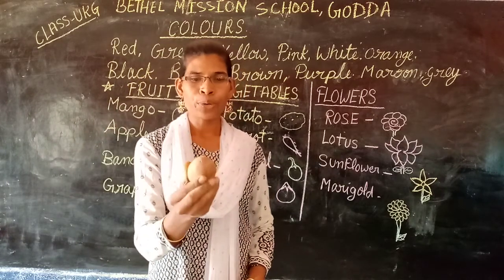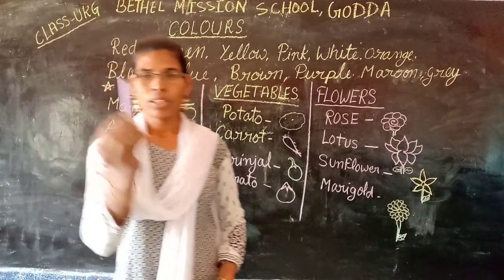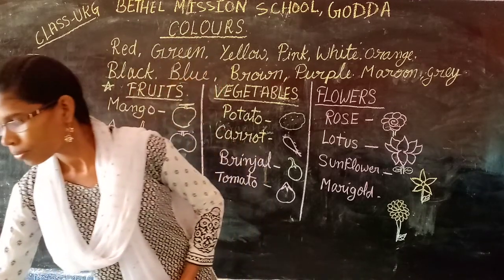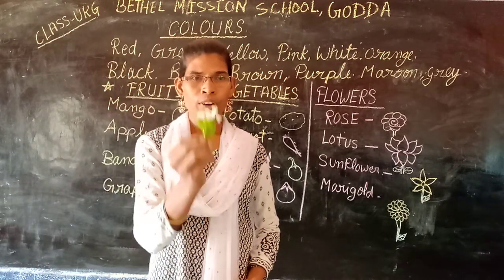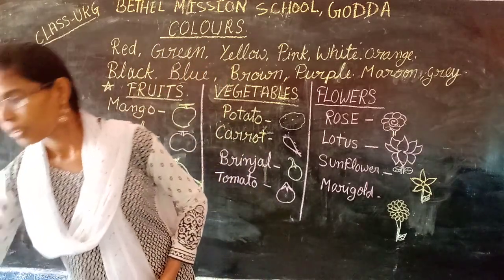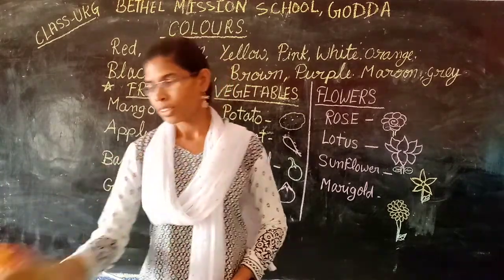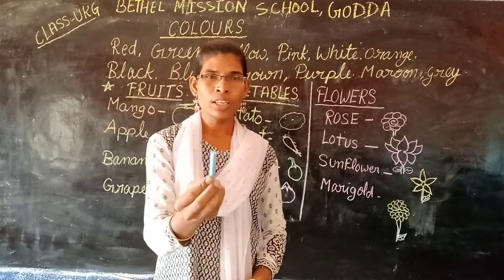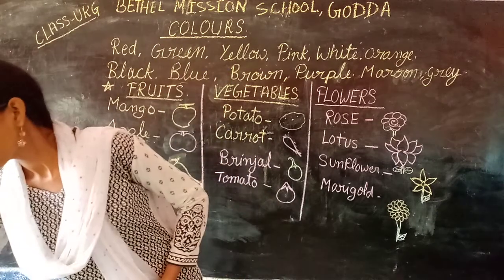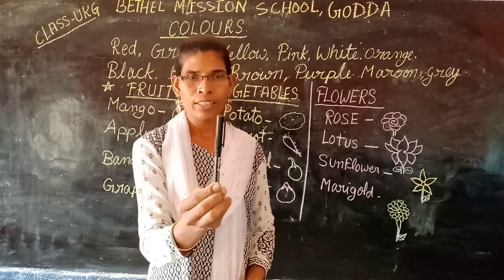This is potato. It is brown in color. This is a chocolate. It is purple in color. These are flowers. They are white in color. These are flowers. They are orange in color. This is chalk. It is blue in color. This is a sketch pen. It is black in color.